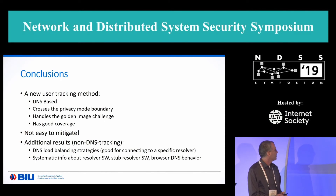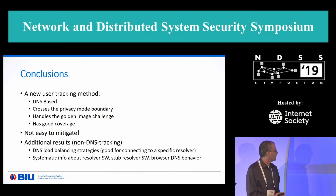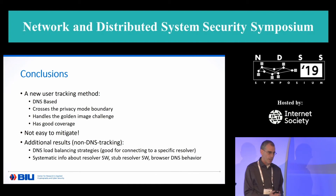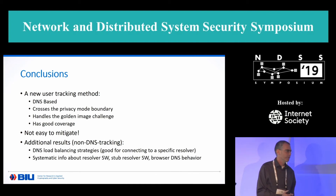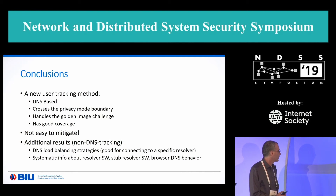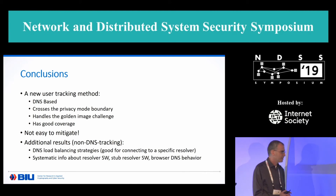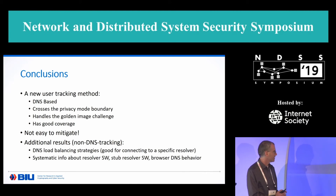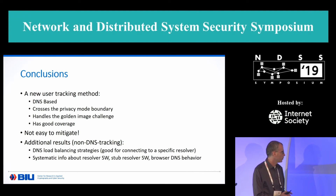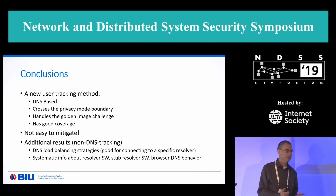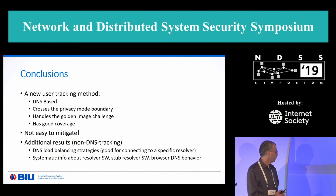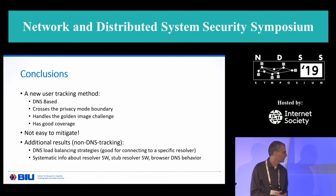To conclude, we've seen a new user tracking method which is DNS-based, which crosses the privacy mode boundary and handles the golden image challenge. It has good coverage, and it is not easy to mitigate. As a byproduct of our research, we outlined the DNS load balancing strategies we encountered — this can be a standalone result that can help an attacker connect to a specific resolver and potentially poison it. We also systematically documented information about resolver software, stub-resolver software, and browser DNS behavior.